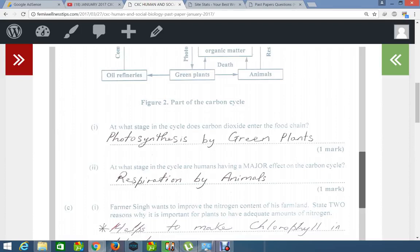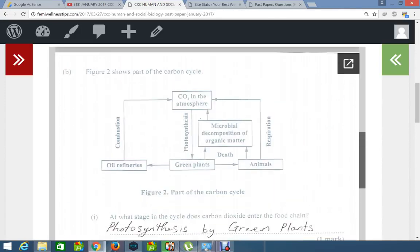Let's move on to the next question. At what stage in the cycle are humans having a major effect on the carbon cycle? And as you can see, respiration by animals. So it is this particular section here where you see that is labeled as respiration by animals.